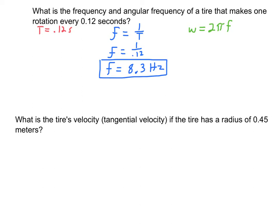Now looking for the angular frequency. Angular frequency is 2 pi times the frequency. This 2 pi is the number of radians — the same as 360 degrees; there are 2 pi radians in a circle. So angular frequency equals 2 pi times the frequency.